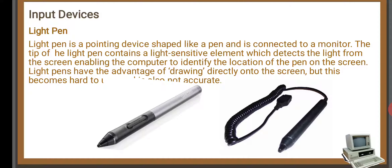The next input device is the light pen. A light pen is a pointing device shaped like a pen which is connected to the monitor. The tip of the light pen consists of a light-sensitive element that detects light from the screen, enabling the computer to identify the location of the pen on the screen. We can draw directly on the screen using this pen. The light-sensitive tip sends signals to the computer.